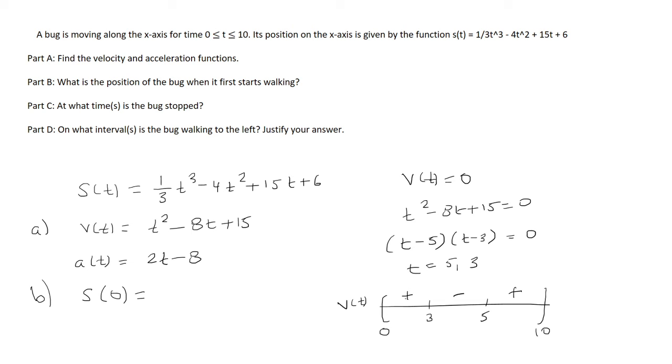So plugging it into this formula, we know that 1/3 t cubed, 4t squared, and 15t will cancel, and we're left with 6.